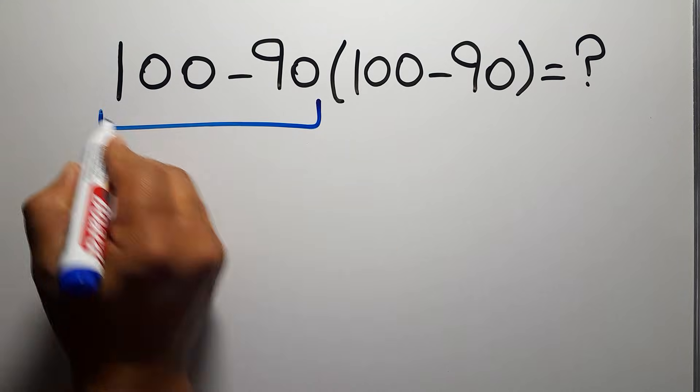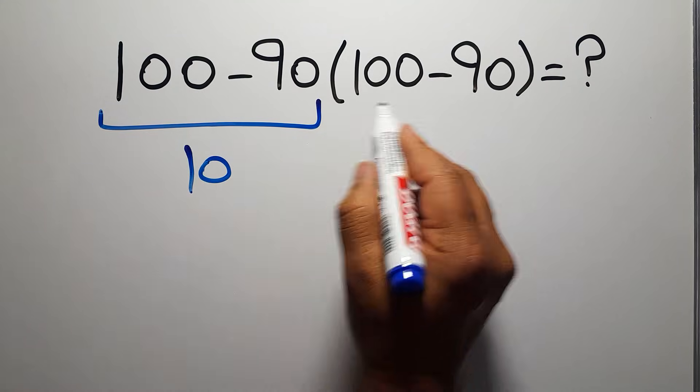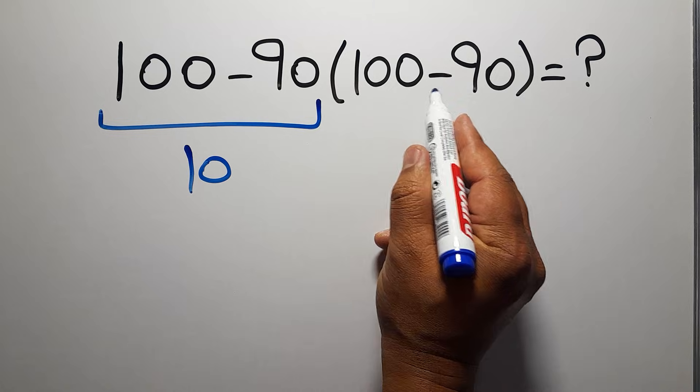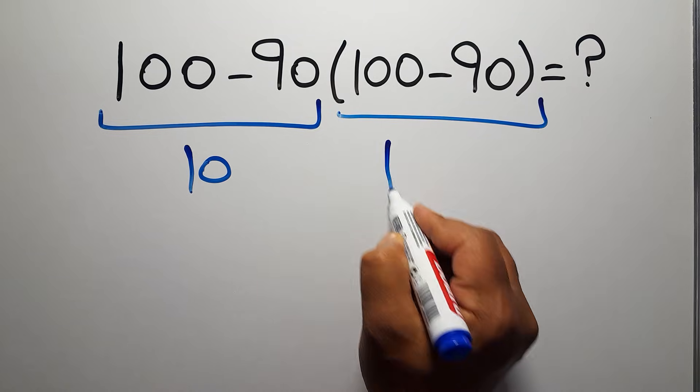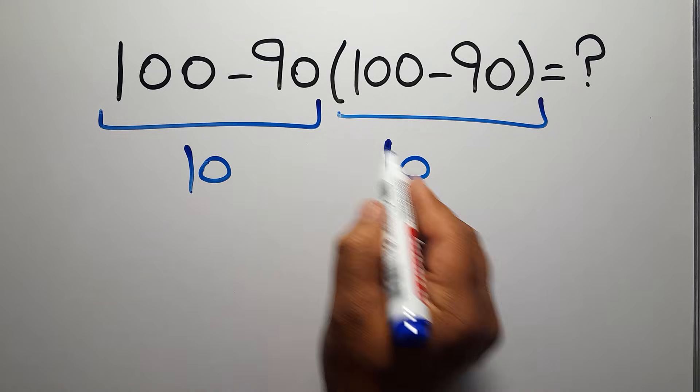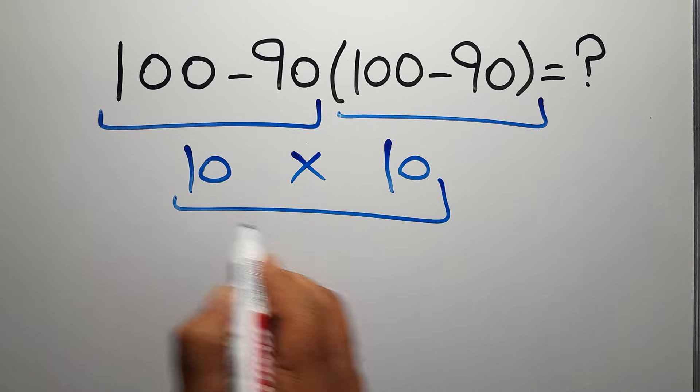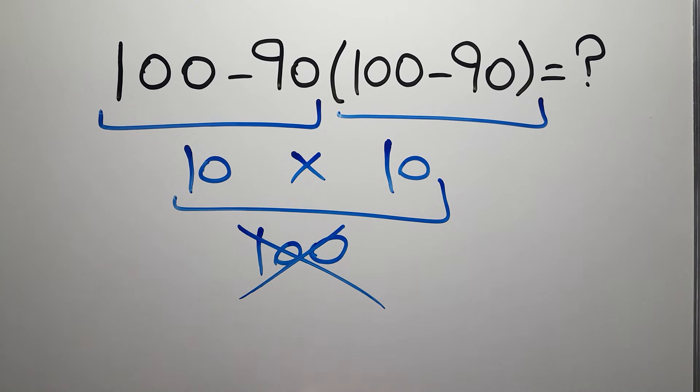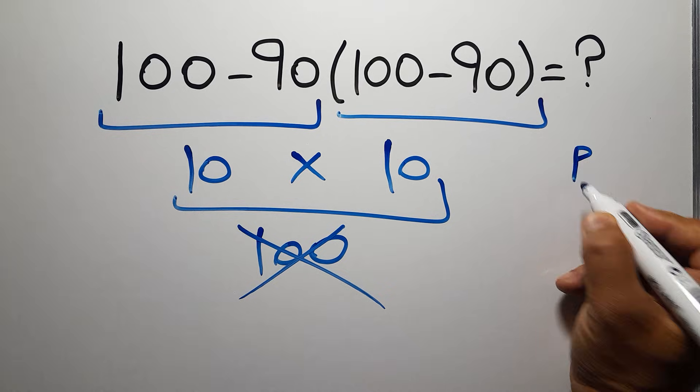100 minus 90 gives us 10, and again here we have 100 minus 90, so 10 times 10 is just 100. But this answer is not correct because according to the order of operations, first we have to do parentheses.